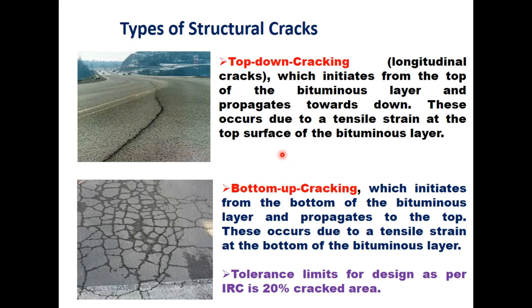There are two types of structural cracks in flexible pavement. One is top-down cracking — cracks which initiate from the top of the bituminous layer and propagate downward, occurring due to tensile strain at the top surface. The second type is bottom-up cracking, which initiates from the bottom of the bituminous layer and propagates to the top, occurring due to tensile strain at the bottom. The tolerance limit for design as per IRC is 20% of cracked area; when cracked area exceeds 20%, the pavement is assumed to have failed.